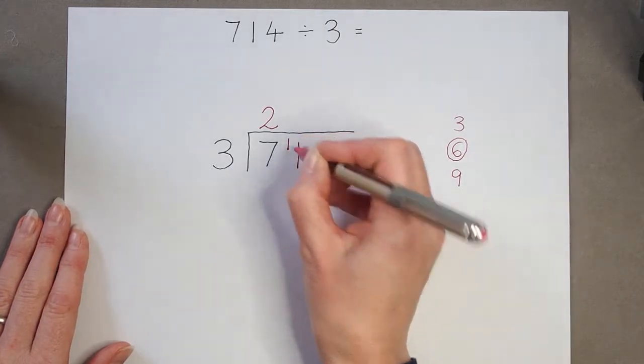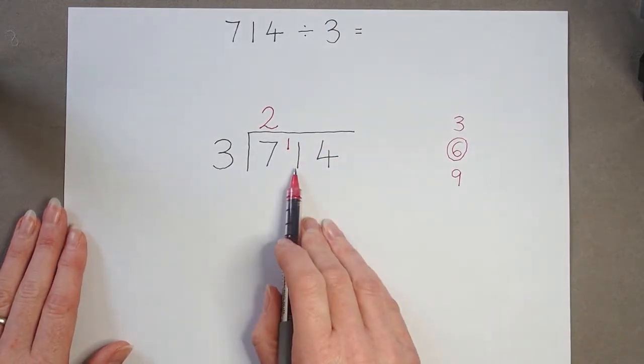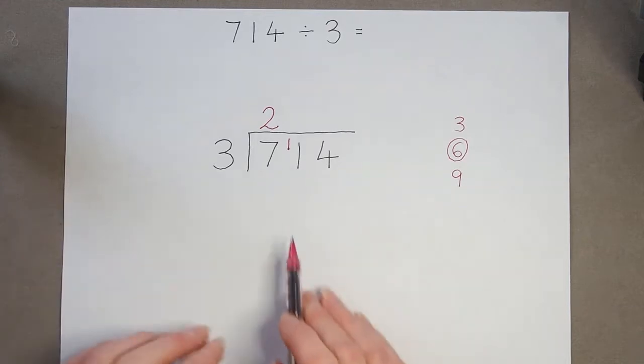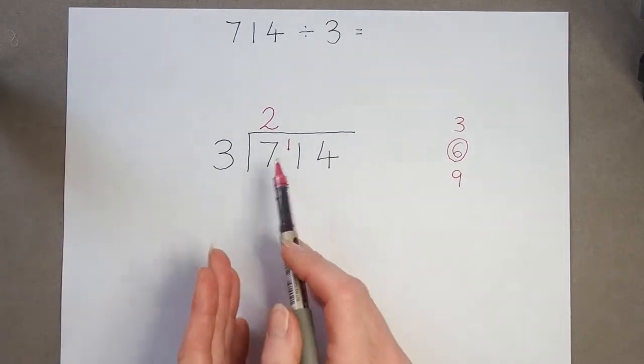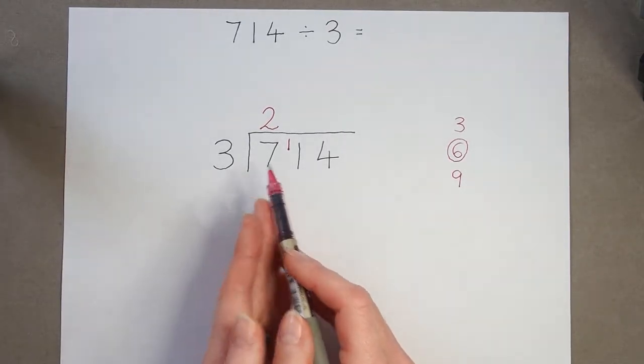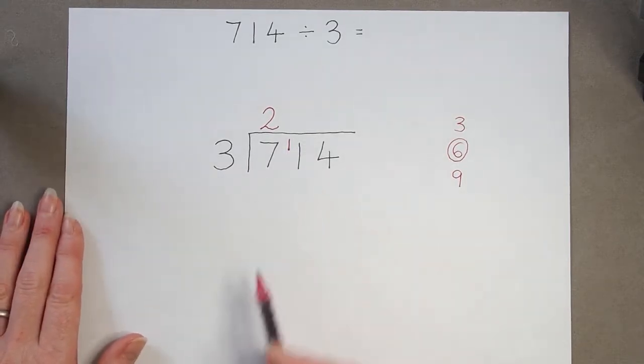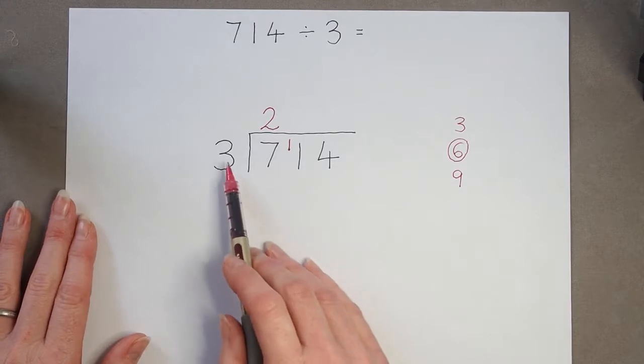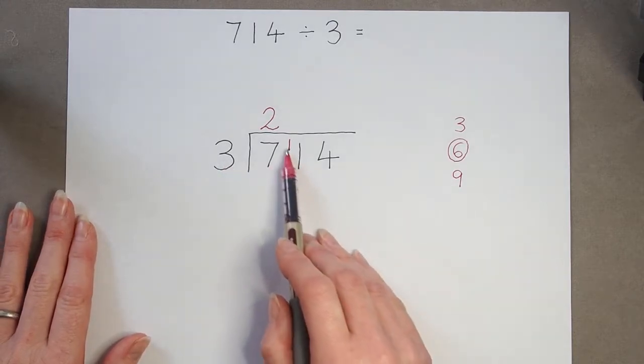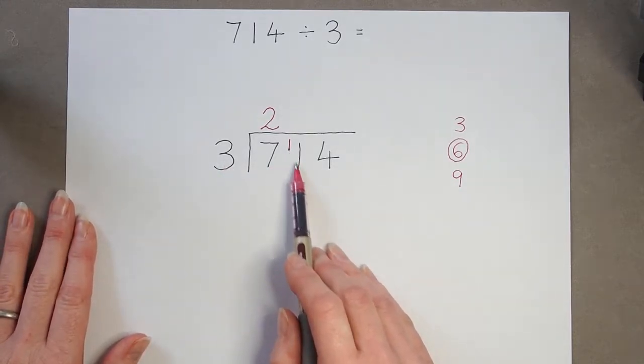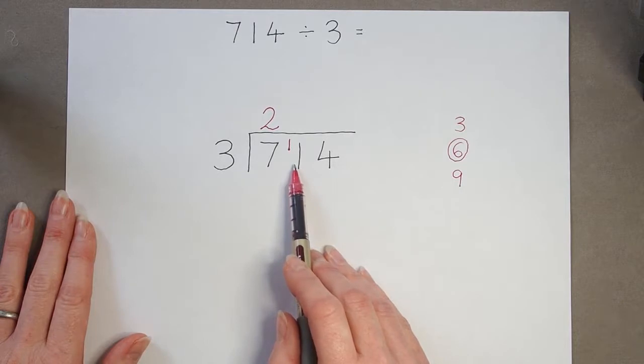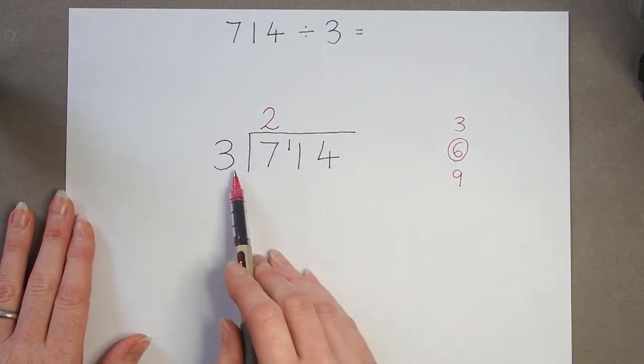So the remainder I put in front of the next number, because really it's one of the hundreds. We're looking at hundreds here, and this is one of my hundreds left over, and now it's moving into my tens column. Now we look at this number. So now I've not got 1 here, I've got 11.